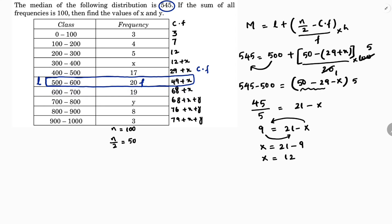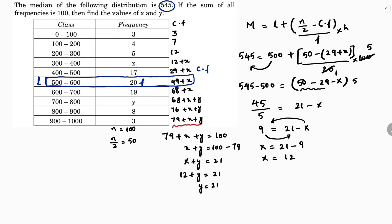Now using total frequency: 79 plus x plus y equals 100, so x plus y equals 21. Since x is 12, we get 12 plus y equals 21, therefore y equals 9. So the value of x is 12 and y is 9.